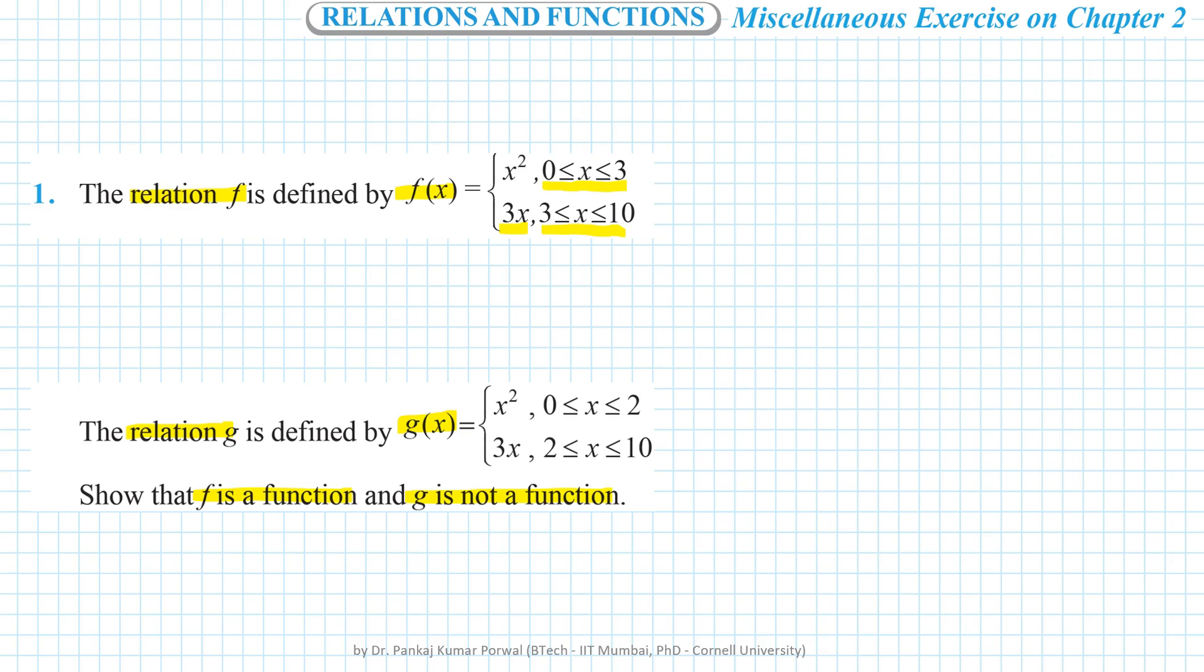Here we note that for all x except 3, we have unique definition for fx. But at x equals to 3, we have two definitions because 3 is included here also and here also.